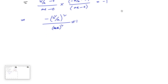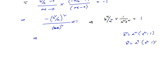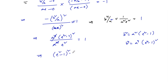This simplifies to b⁴ upon a² · e² equals 1, or b⁴ equals a² · e². Since b² equals a²(e² − 1), we have b⁴ equals a⁴(e² − 1)². Substituting: a⁴(e² − 1)² upon a⁴ · e² equals 1. Cancelling a⁴, we get (e² − 1)² equals e².